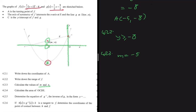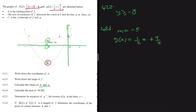Now we're just looking for n. Since we have the equation of g(x) = ½x + 9/2, we substitute x = -5: g(-5) = ½(-5) + 9/2 = 2. So m = -5 and n = 2.